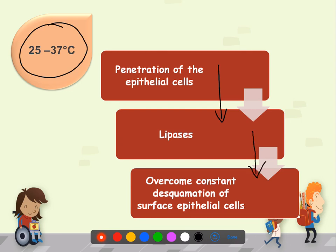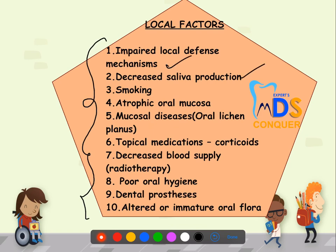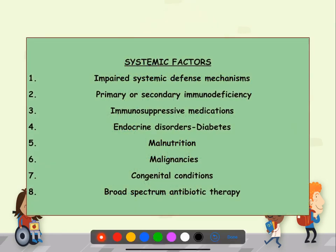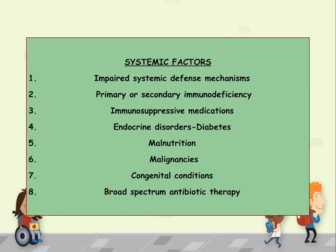The predisposing factors are of two types: local and systemic. Local factors include impaired local defense, decreased salivary production, smoking, atrophic oral mucosa, other mucosal diseases, topical corticosteroids, decreased blood supply due to radiotherapy, poor oral hygiene, dental processes, and altered or immature oral flora. Systemic factors include impaired systemic defense mechanisms, immunodeficiency states, endocrine disorders, malnutrition, malignancies, congenital conditions, and broad-spectrum antibiotic therapy.